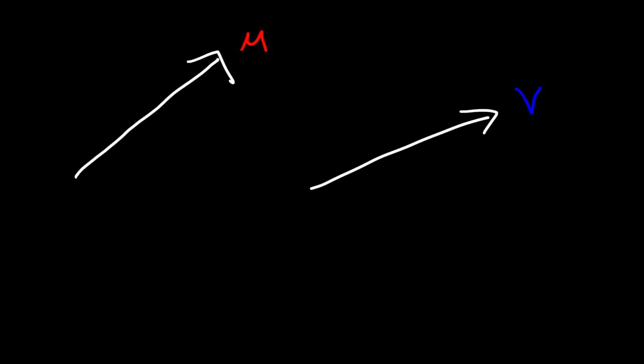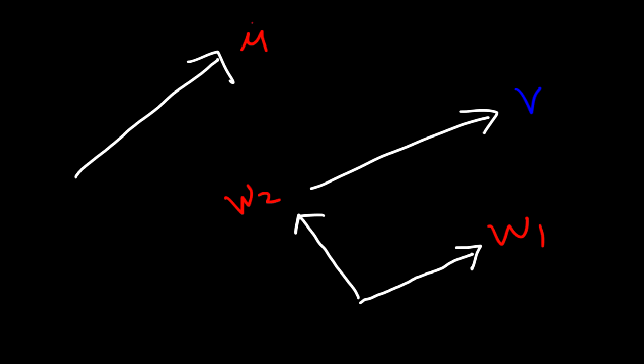Let's say we have two vectors, vector u and vector v. How can we find two components of vector u, one of which is parallel to vector v and the other is perpendicular to vector v? So let's draw a picture. Let's say this is w1 and perpendicular to it is w2. How can we find those two components of vector u, where w1 is parallel to vector v and w2 is perpendicular or orthogonal to vector v?